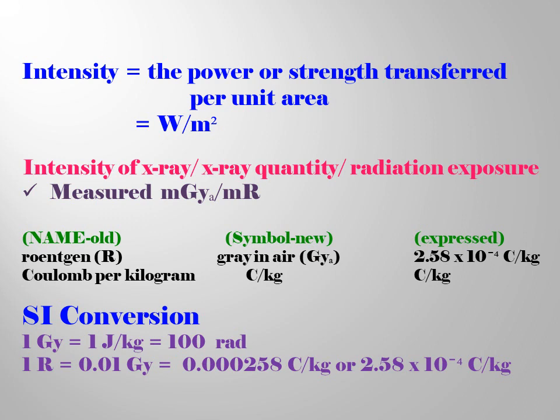And C per kg, expressed in 2.58 multiplied by 10 raised to the power of negative 4 C per kg.